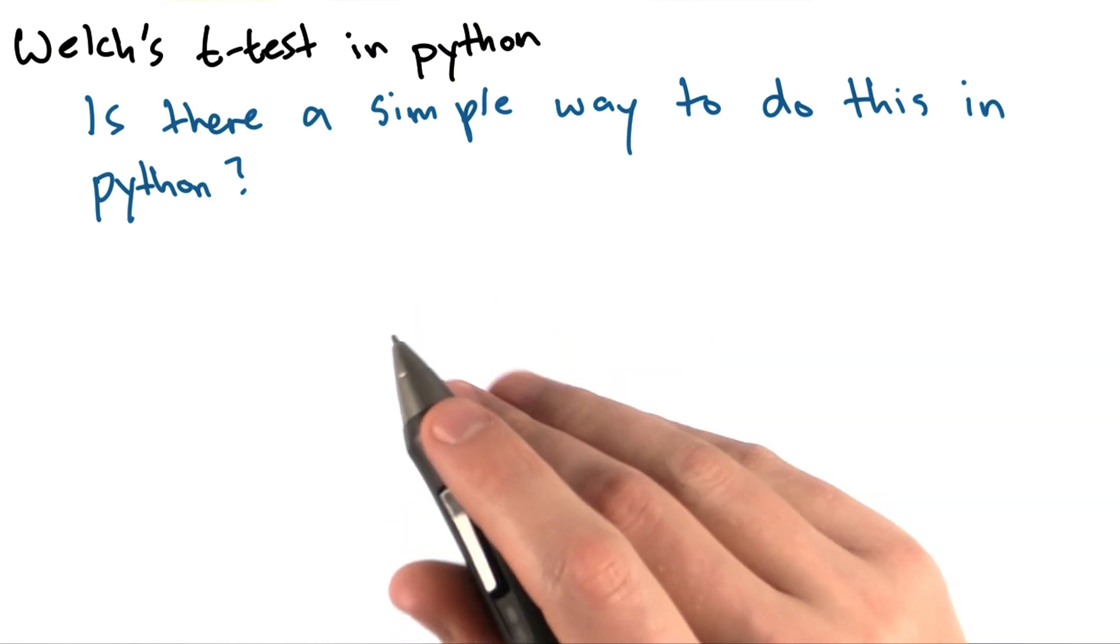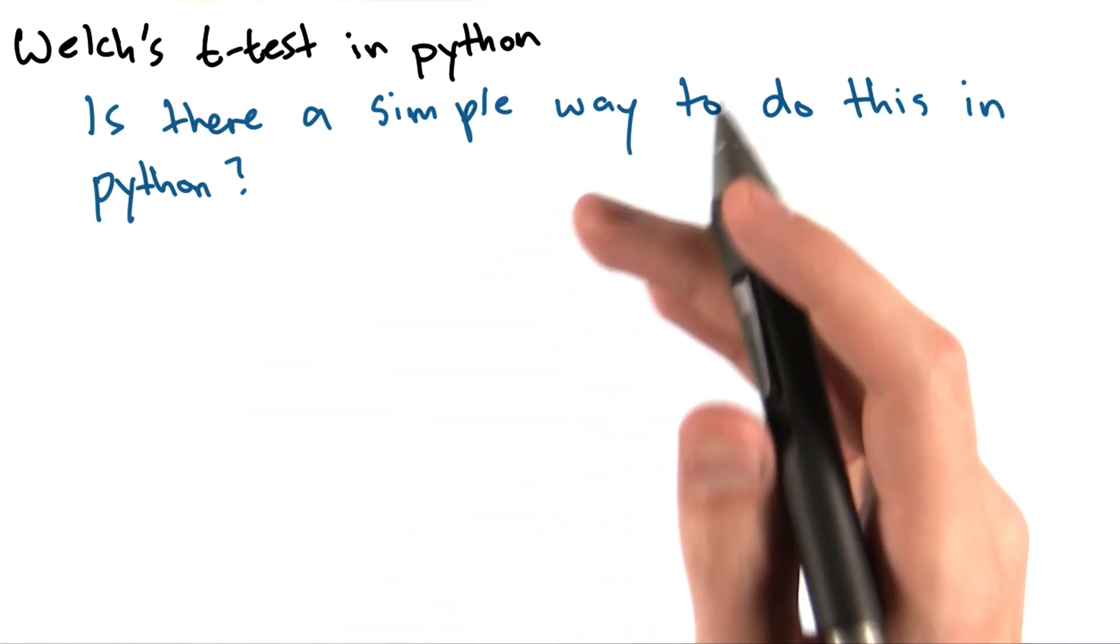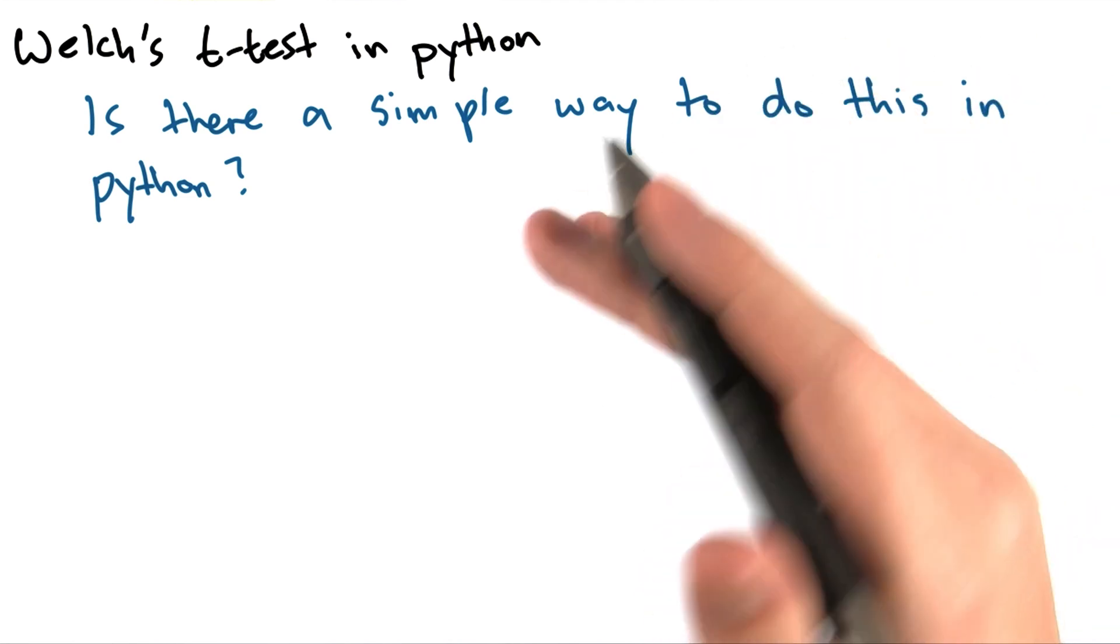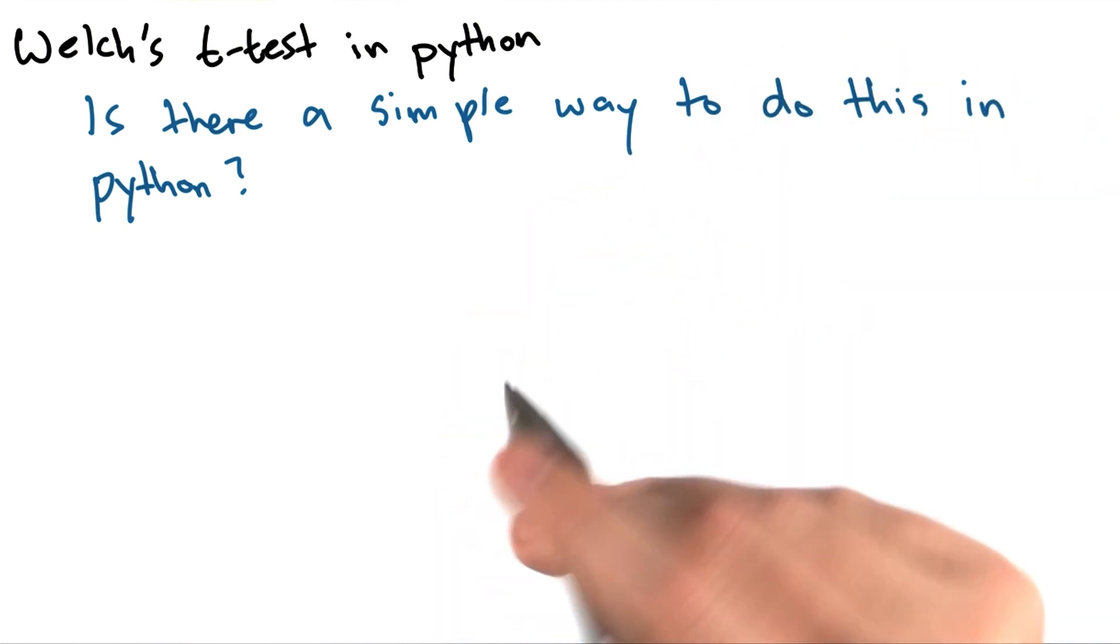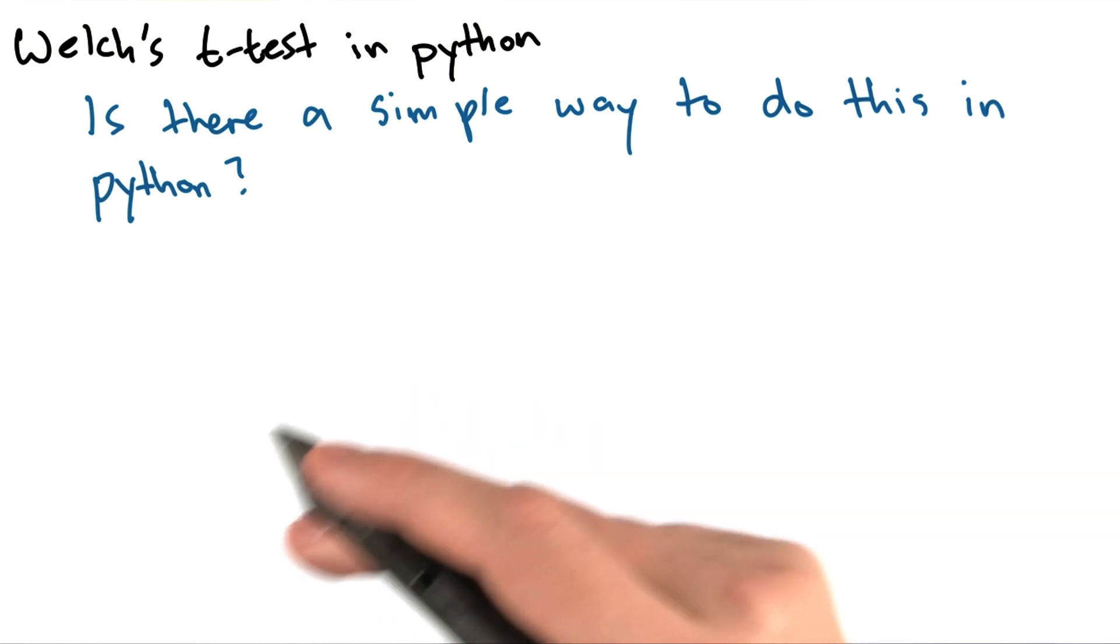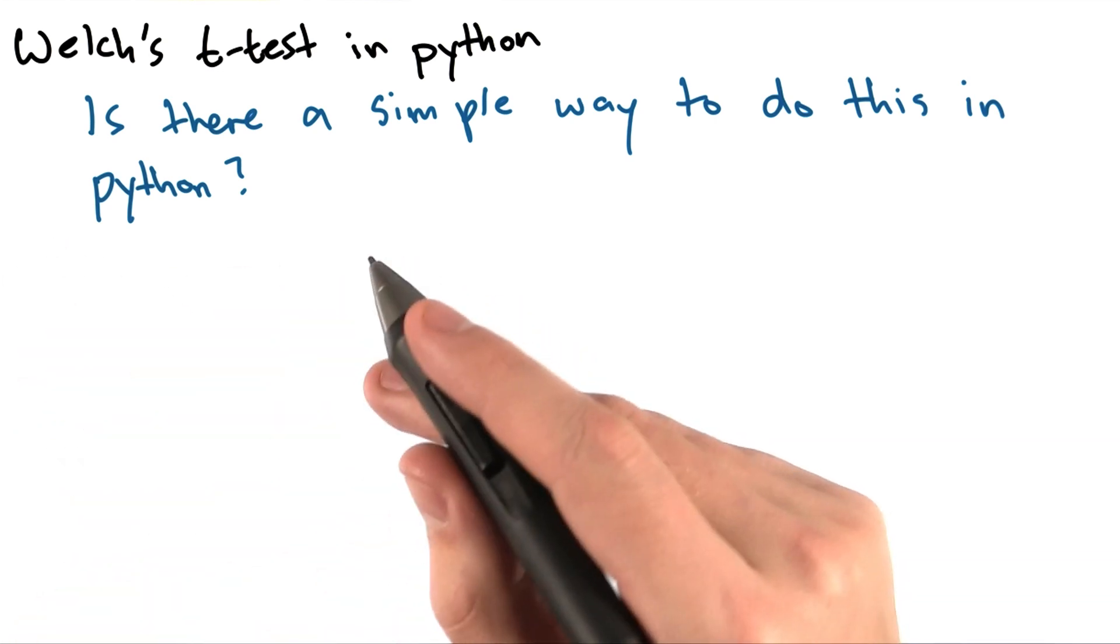All right, so we've established that we can do this t-test and compute these t-values and p-values in the abstract mathematical sense, but you might be wondering, how do I do this in Python? Is there a simple way to do this?